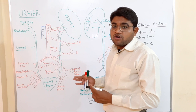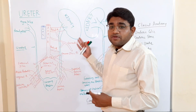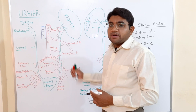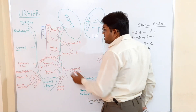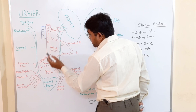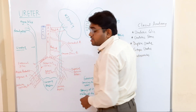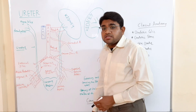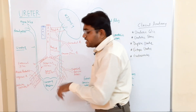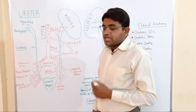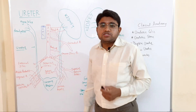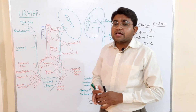The ureter proper runs downward and medially on the anterior side of the transverse processes of the vertebrae and on the psoas major muscle. It then crosses the common iliac vessels from the anterior side and enters into the pelvic cavity.